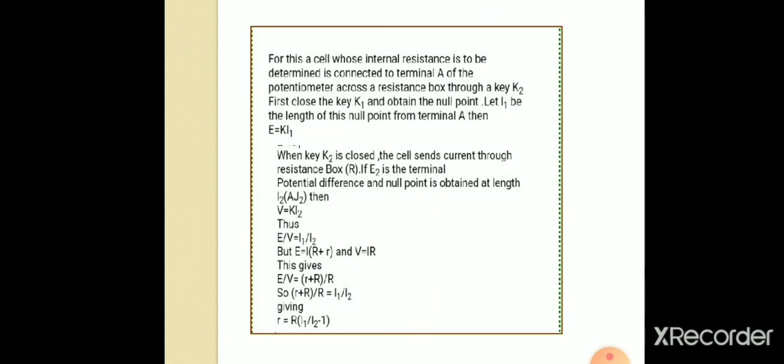When key K2 is closed, the cell sends a current through the resistance box. If E2 is the terminal potential difference by including the resistance box and if the null point is obtained at a length L2, then potential difference V will be equivalent to K into L2.